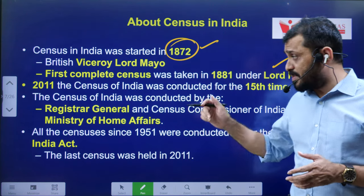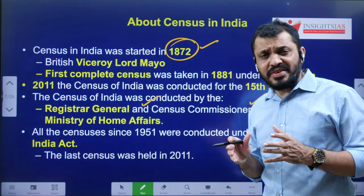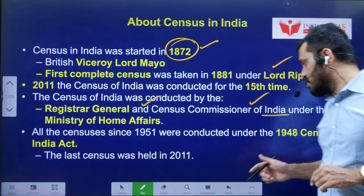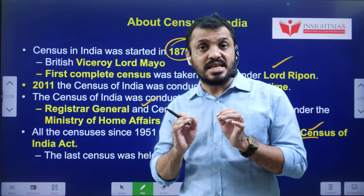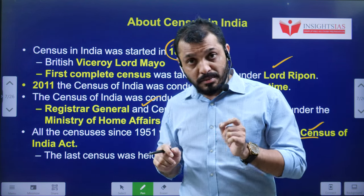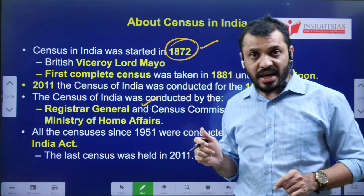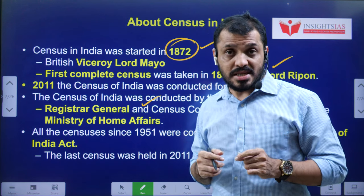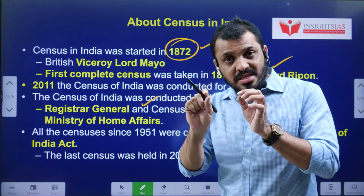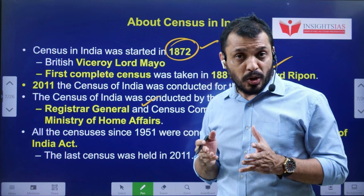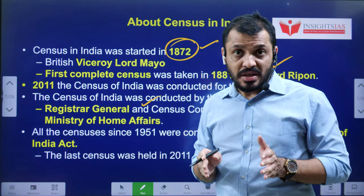The census is conducted by the Registrar General as well as the Census Commissioner of India, under the Ministry of Home Affairs. It has statutory backing — census is carried out according to the Census Act of 1948. State governments cannot conduct the census because the law related to census was made by Parliament in the form of the Census of India Act 1948, and this jurisdiction belongs only to Parliament. That is the reason Bihar government used the word 'survey' rather than 'census.' Under Article 162, state legislative and executive functions are co-terminus.